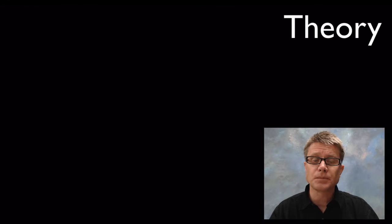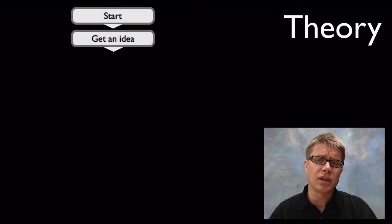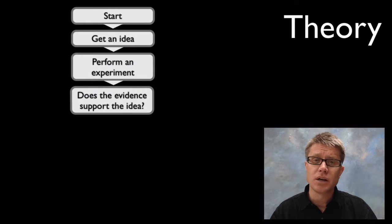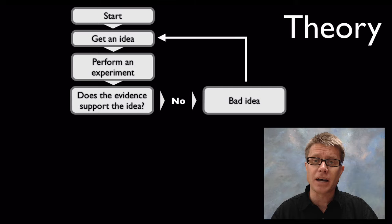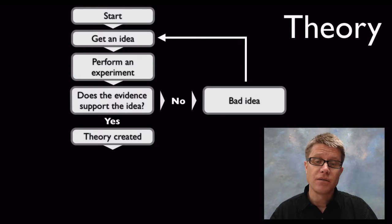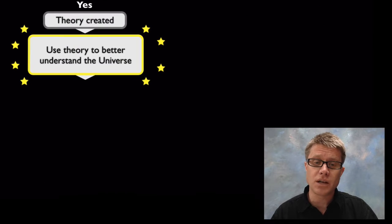How does a theory develop? Well, theories start when a scientist comes up with an idea, then performs experiments and looks at whether the evidence supports that idea. If it doesn't, they go back and come up with a better idea and perform more experiments. If the evidence does support the idea, then a theory can be created, and that theory is used to better understand the universe. Natural selection is a great example of that.